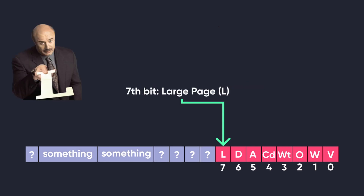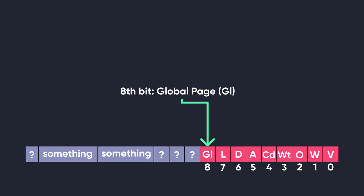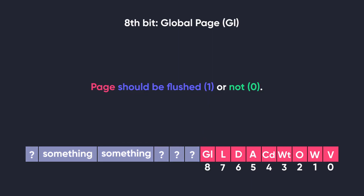The seventh bit is large. This bit tells whether the page is a large page or not. When set to 1 it is a large page; when set to 0 it is a normal 4KB page. The eighth bit is global. This tells whether the page should be flushed into the Translation Lookaside Buffer, or TLB, which is the caching mechanism used for pages. When set to 1 the page should be flushed; when set to 0 it should not be flushed.